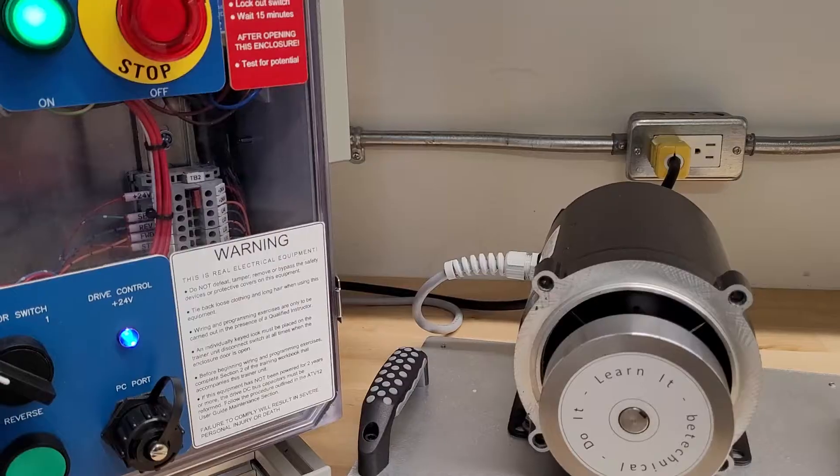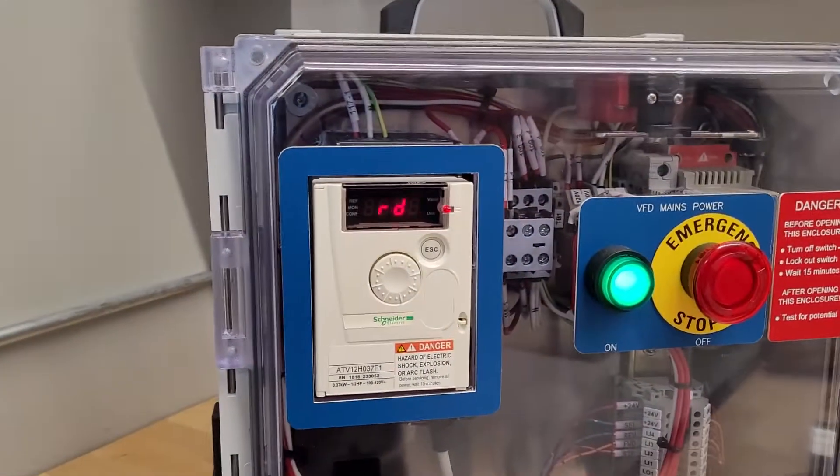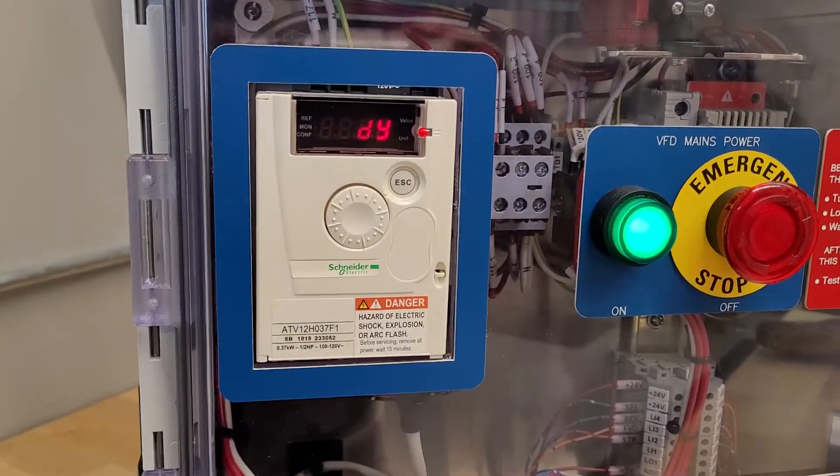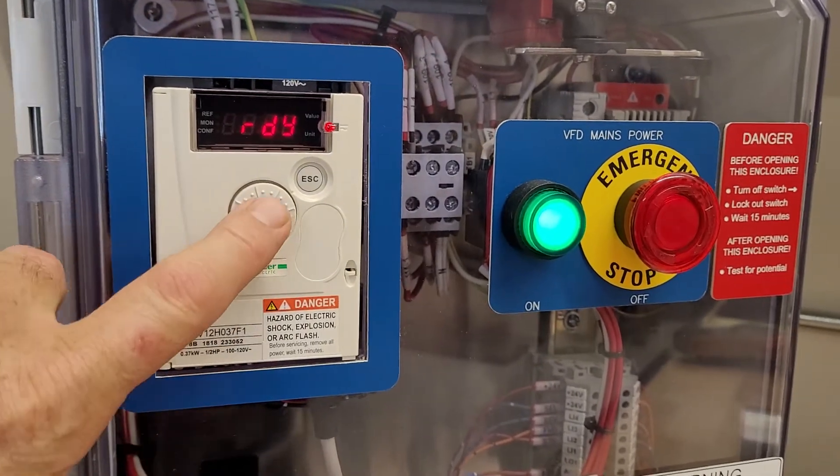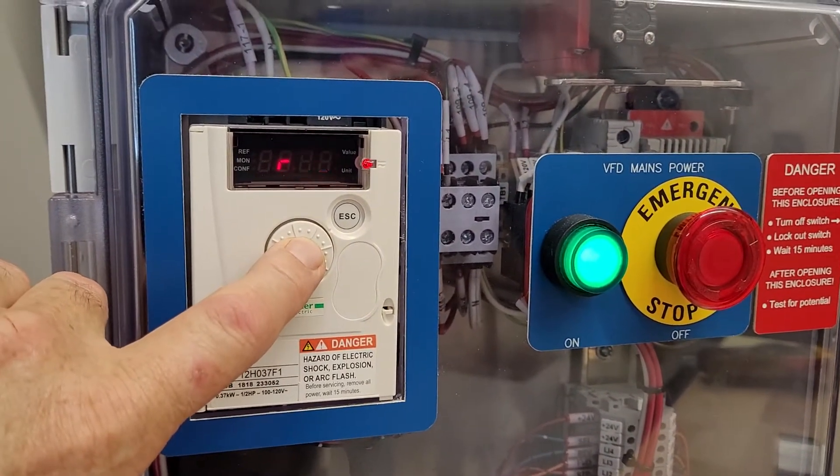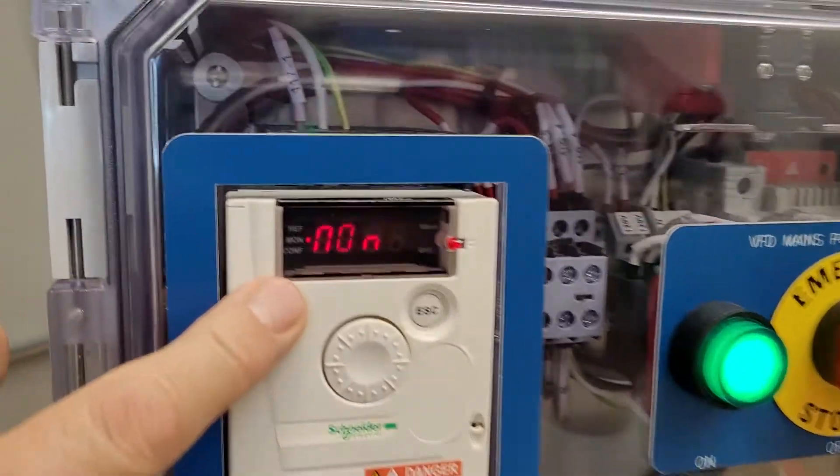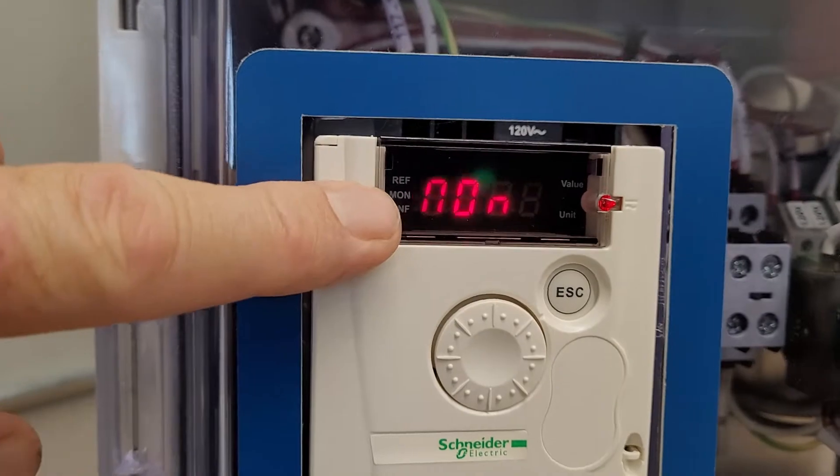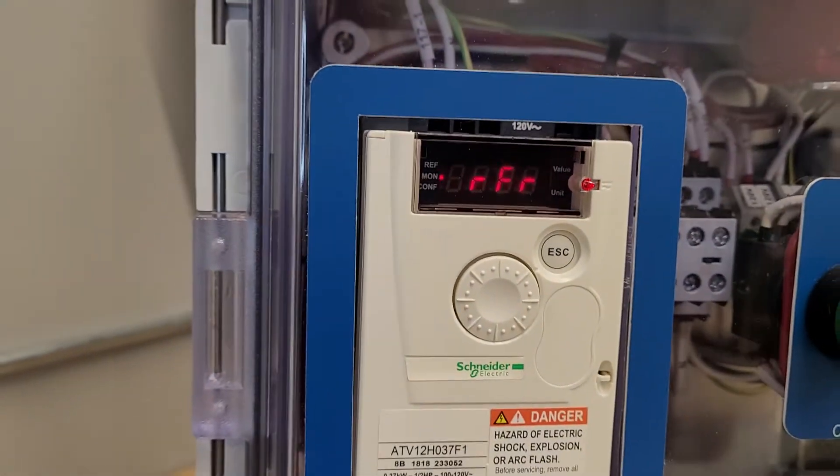We are going to use this little ATV12 drive to view some parameters. So I have a 1/3 horsepower motor and a 120 volt input ATV12 variable frequency drive. So what we are going to do is go into the monitoring menu, which is the second one down. We push the center button, scroll down to monitor, hit enter. Now we are into the monitoring menu.